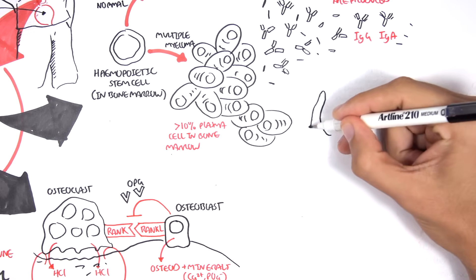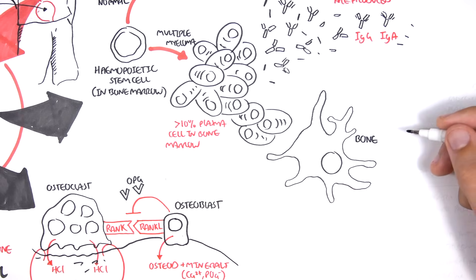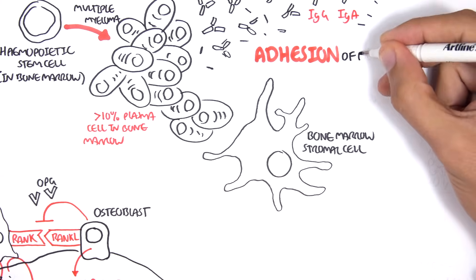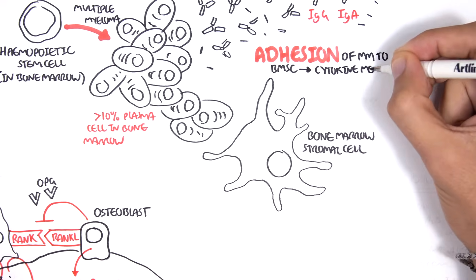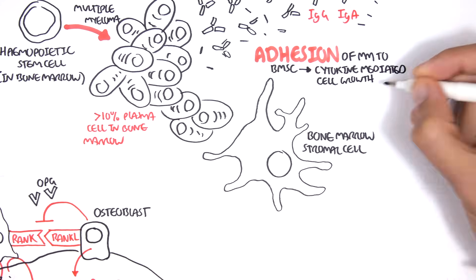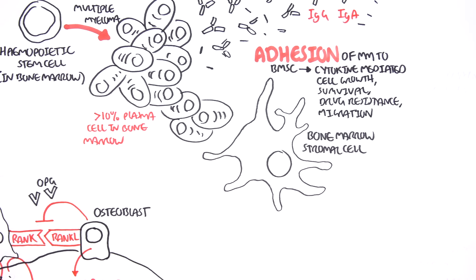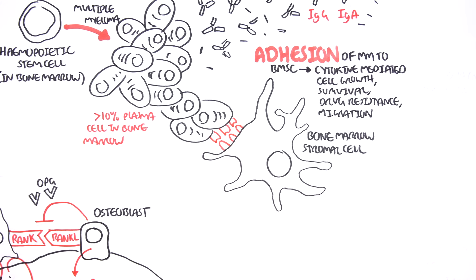Now let me introduce the bone marrow cells and the pathophysiology of multiple myeloma. The bone marrow stromal cells normally regulate hematopoiesis. But in multiple myeloma, these bone marrow stromal cells will interact with these cancerous cells through receptors and cytokines. Adhesion of multiple myeloma cells to the bone marrow stromal cells results in cytokine-mediated cell growth, survival, drug resistance, and migration. Essentially, the bone marrow stromal cells helps the multiple myeloma cells survive and grow.